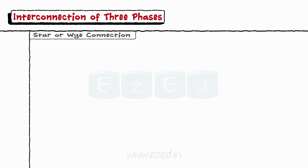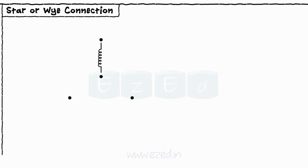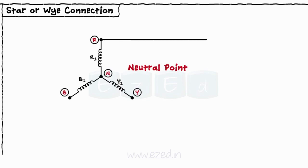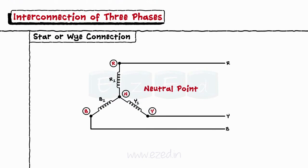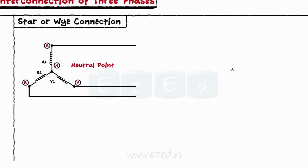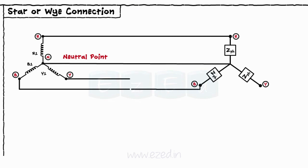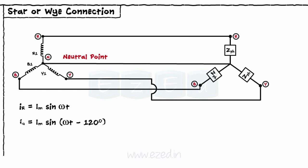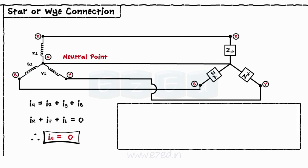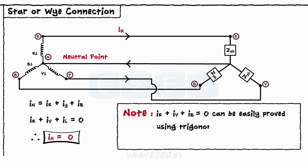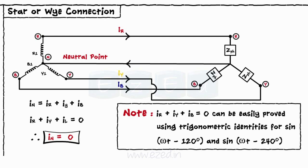Let's study the star or Y connection. In this type of connection, one end of all three phases is joined together to a common point called the neutral point. Three conductors are taken out from the three phases as R, Y, and B terminals. When loads having equal magnitude are connected to the star connection, we get the star connected balanced load system. The line currents have equal magnitude but differ in phase. For the balanced system, the current flowing through the neutral wire is always zero, so we can easily remove the neutral wire from the system.